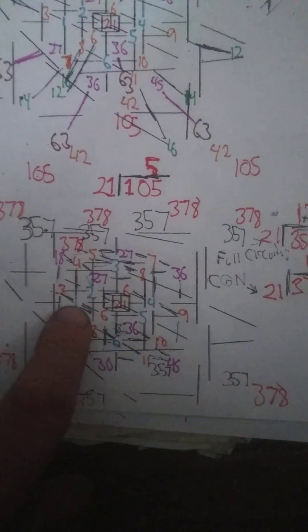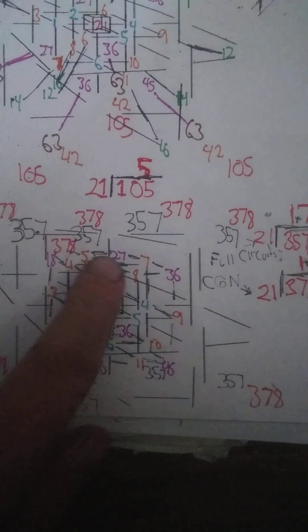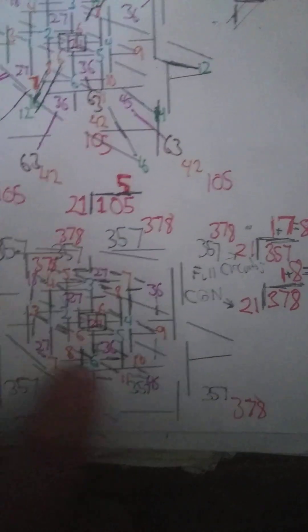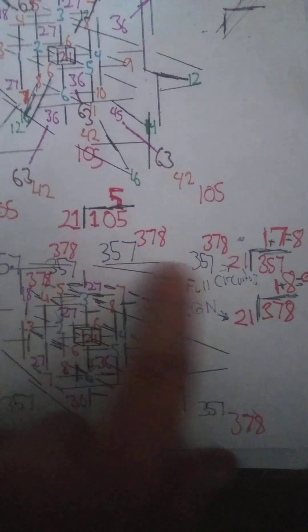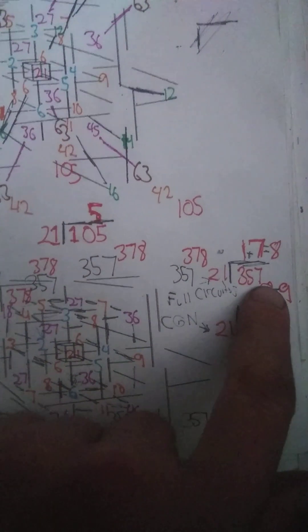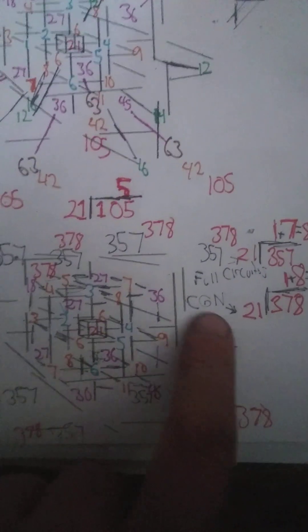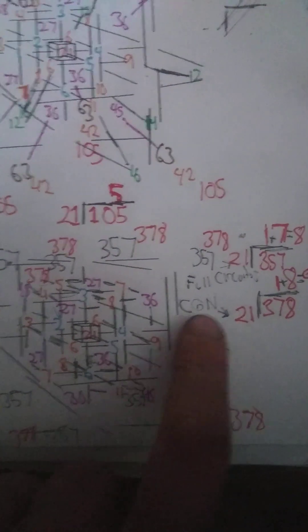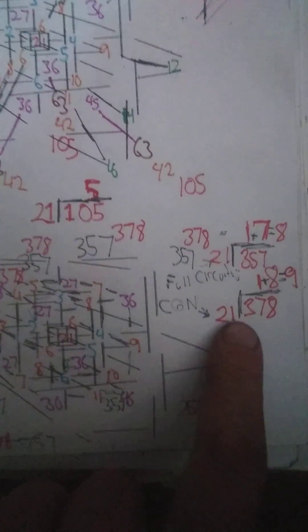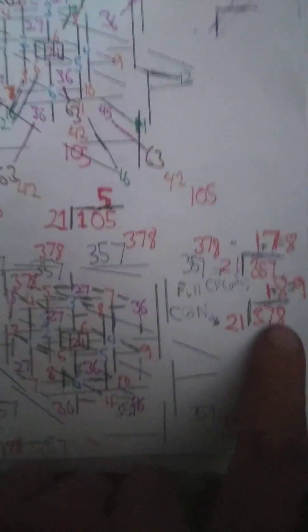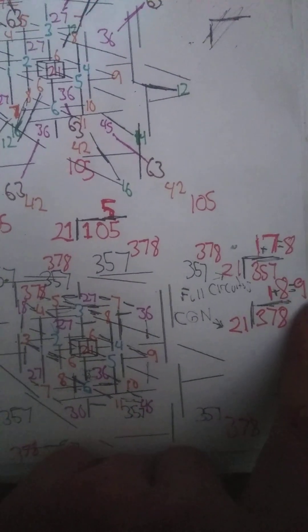I included the central plane number all around in this full complete circuitous box to get 357. 21 goes into 357 seventeen times—seven plus one is eight. And then I included the central ghost number with that, so that's the whole entire box added together. 21 goes into 378 eighteen times—one plus eight is nine.